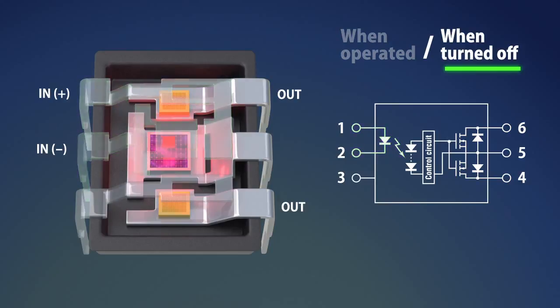PhotoMOS will be turned off when the current at the input terminal is cut off. The LED stops emitting light and the voltage of the photoelectric element decreases. When the voltage supplied from the photoelectric element decreases, the control circuit rapidly discharges the gate charge of the MOSFET. This operation makes the MOSFET stop conducting and turns off the load.